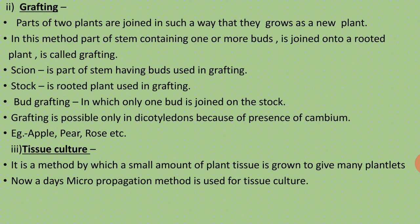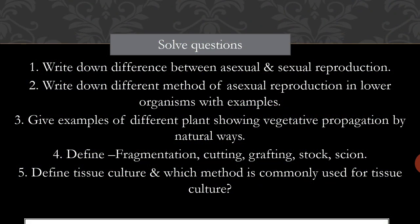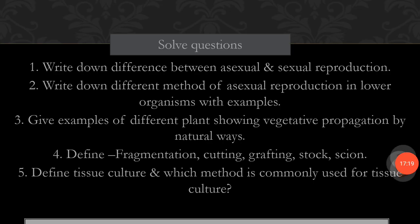Nowadays, micropropagation is used for tissue culture. 'Micro' means using a smaller part, and 'propagation' means obtaining a number of copies — that is micropropagation. In this way, there are three artificial methods of vegetative propagation: first, cutting; second, grafting; and third, tissue culture. Thank you.